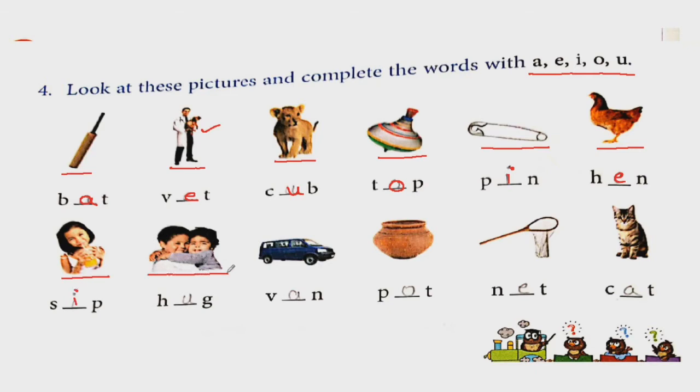Now look at these two boys. What are they doing? One is giving a hug to the other boy. So the spelling will be H, U, G. We will use vowel U. Then this is the picture of van. V, A, N, van. So here we used vowel A. Now what does it look like? This is a pot. So pot's spelling: P, O, T, pot. What did we use here? Which vowel? O.